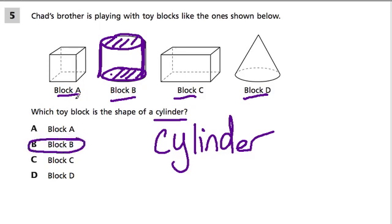But let's look at the other shapes. Here, Block A is called a cube. A cube is a really special shape because every face, that's these sides right here, is exactly the same. It's all the same on every side.